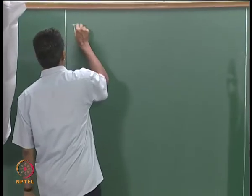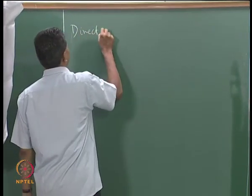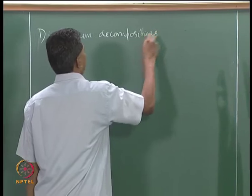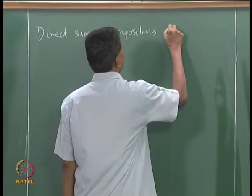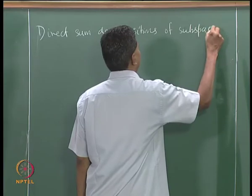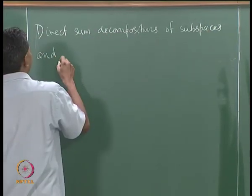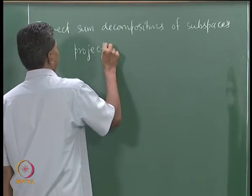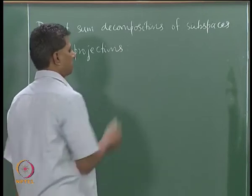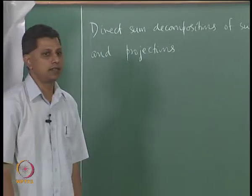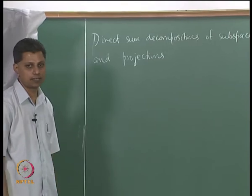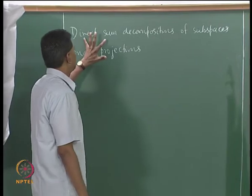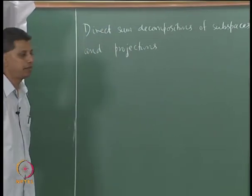We will discuss direct sum decompositions of subspaces and the relationship with projections, and see how this is related to the problem of diagonalizability of an operator. We will first discuss the notion of direct sum decompositions; we need the notion of independent subspaces.